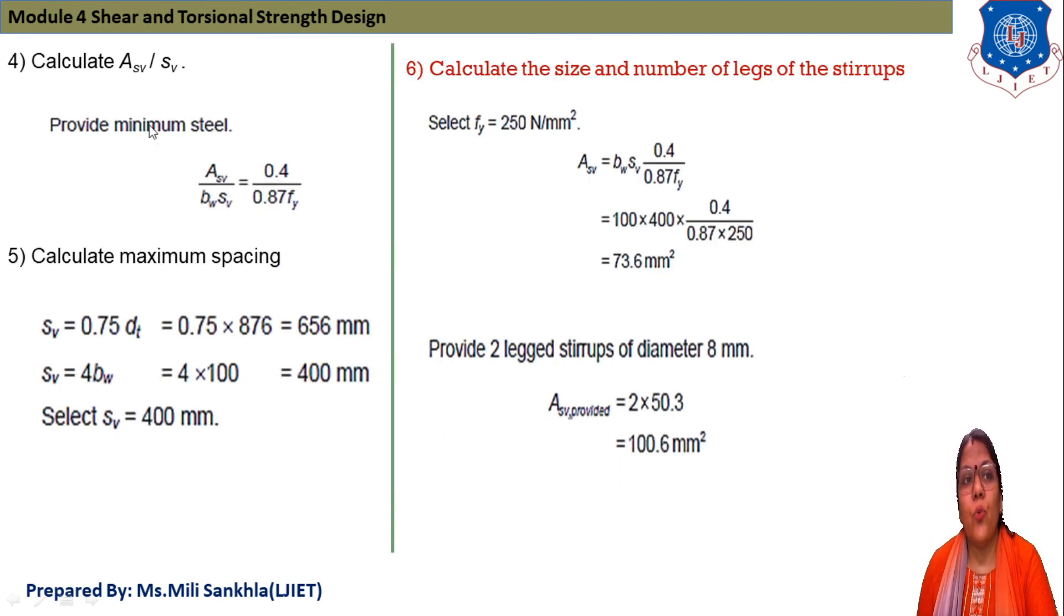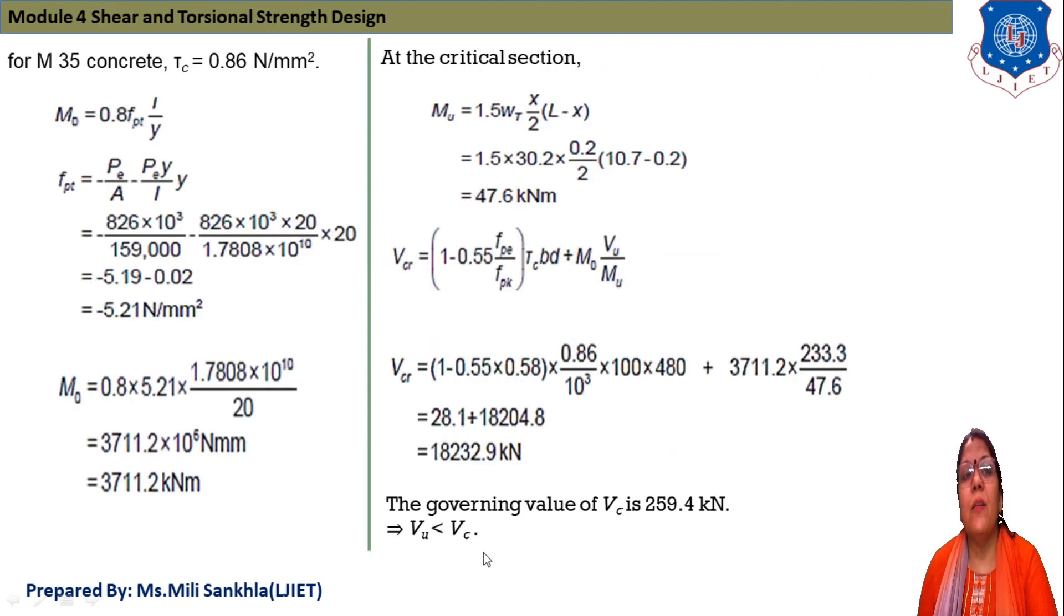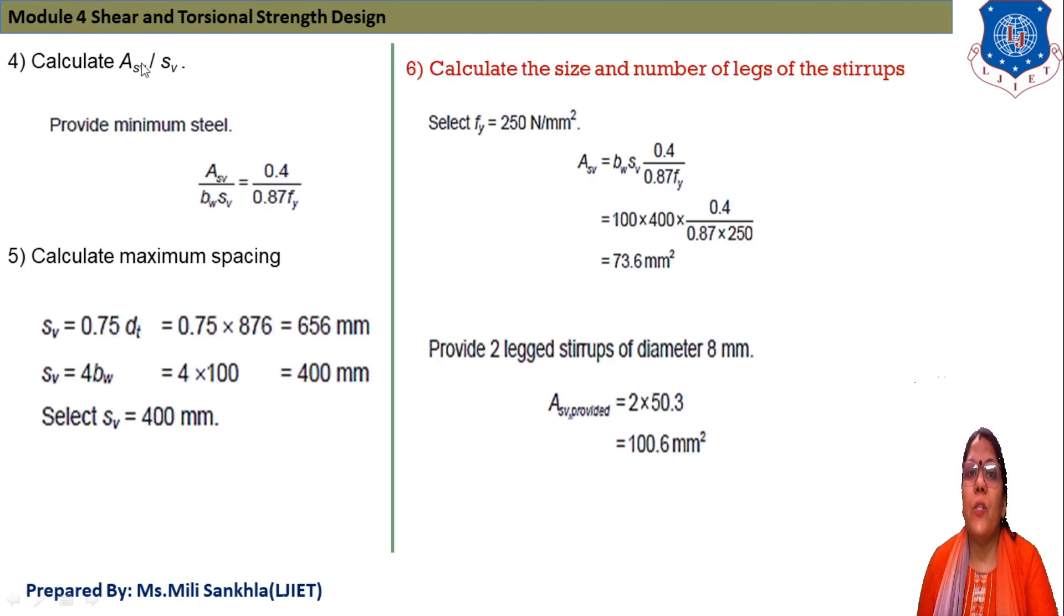Then we find ultimate moment at critical section, that is 1.5wx/2(l-x). Take x equals 0.2 m and w equals our dead load 30.2 kN/m. After putting all values we get 47.6 kN·m. Now we find Vcr. Vcr we get 1127.24 kN and here Vc first we get that is 259.4 kN and our Vu is less than Vc.